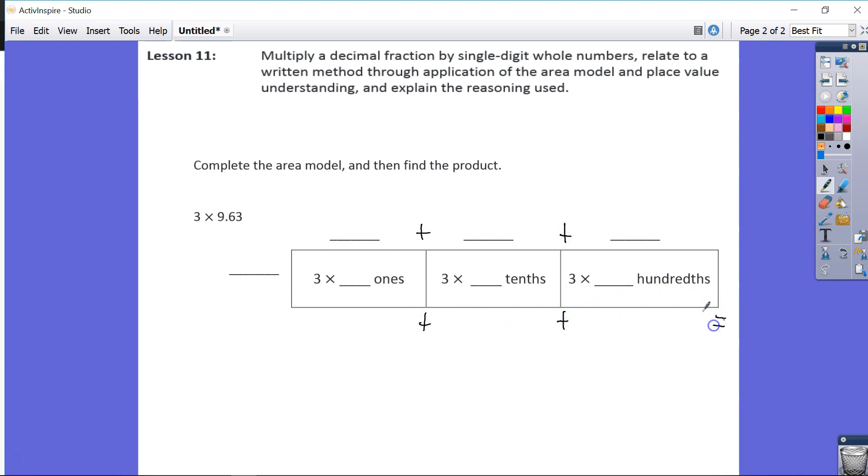We know that once we find our partial products, we're going to add them together to get our final product. So, we have 3 times 9 ones, 6 tenths, and 3 hundredths. So, 9 ones, 6 tenths, 3 hundredths.